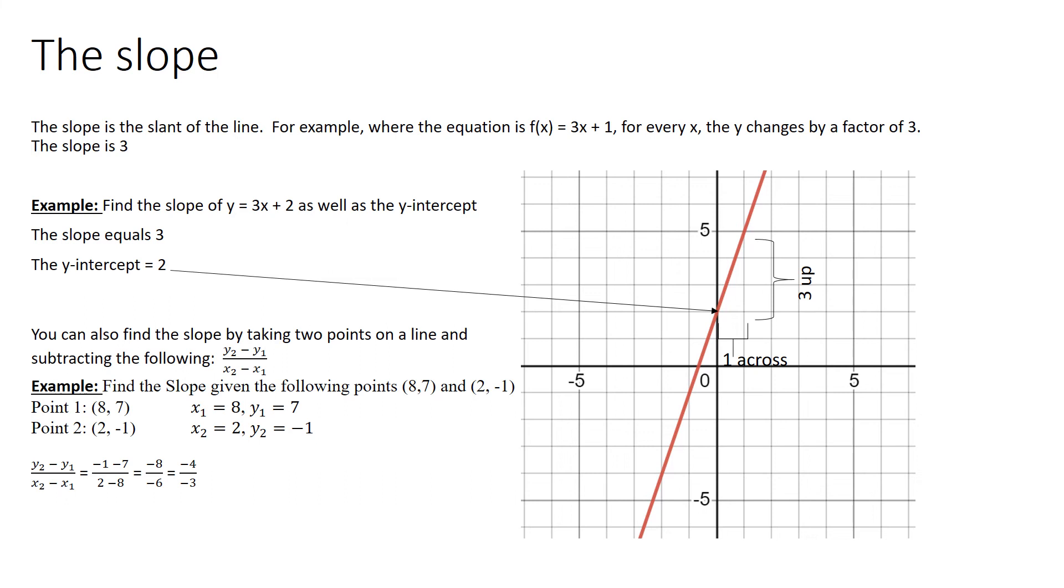But I can also graph it, I can say it's vertical over horizontal. If I start at one point here on that 0, 2, and then go where does it touch again, at the 5, 1, well it goes up 3, that's my vertical, it goes across 1, so that's the ratio.